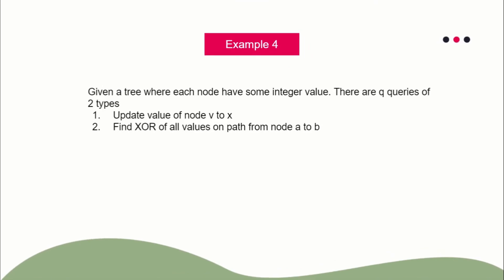The fourth type of problem involves queries where results from ranges can be combined to form the result of a bigger range — all of those can be answered using a segment tree. For the second query here, we have to find the XOR on the path from A to B. Again, this can be solved using a segment tree or Fenwick tree after flattening the tree.